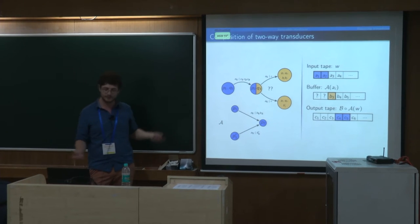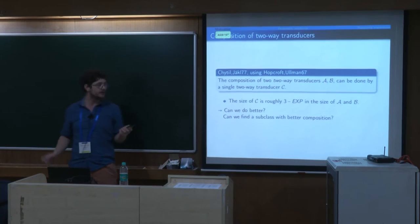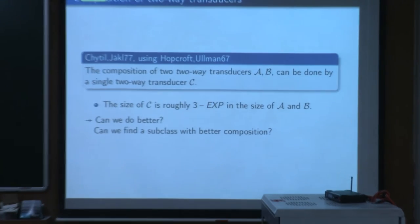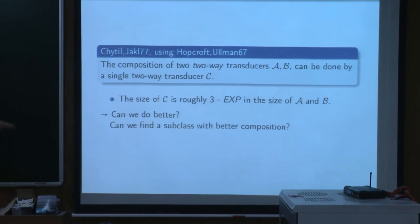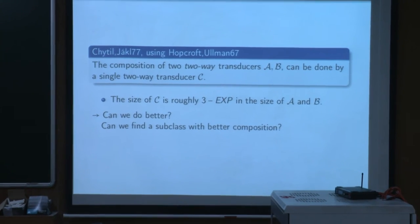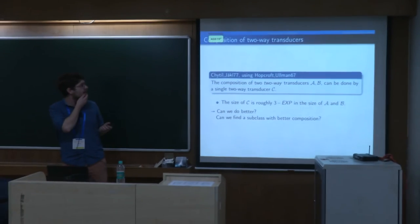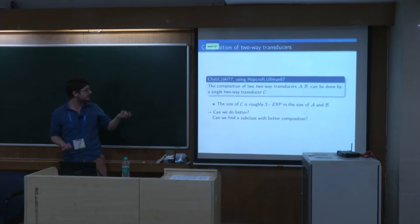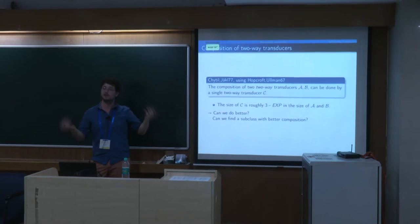Composition is still doable — this is a result by Kittel and Yackel from 1977, using a trick by Hopcroft and Ullman. The composition of two two-way transducers can be done with a two-way transducer. But the complexity is roughly 3^|A|. The starting point of our work is: can we do better? In the one-way case it's polynomial and easy to understand, while this construction is very involved with high complexity.